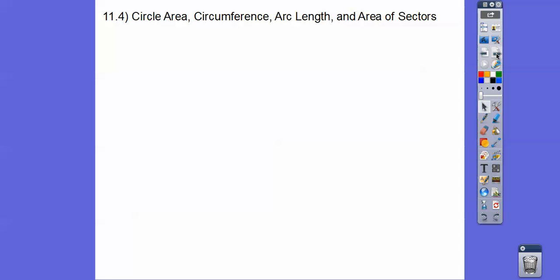Alright, so circles, area, circumference, arc length, and area of sectors. So circles, you guys, the area is just πr², that's pi times r squared. Circumference is either 2πr or π times the diameter, depending on if they give you the radius or the diameter right there.